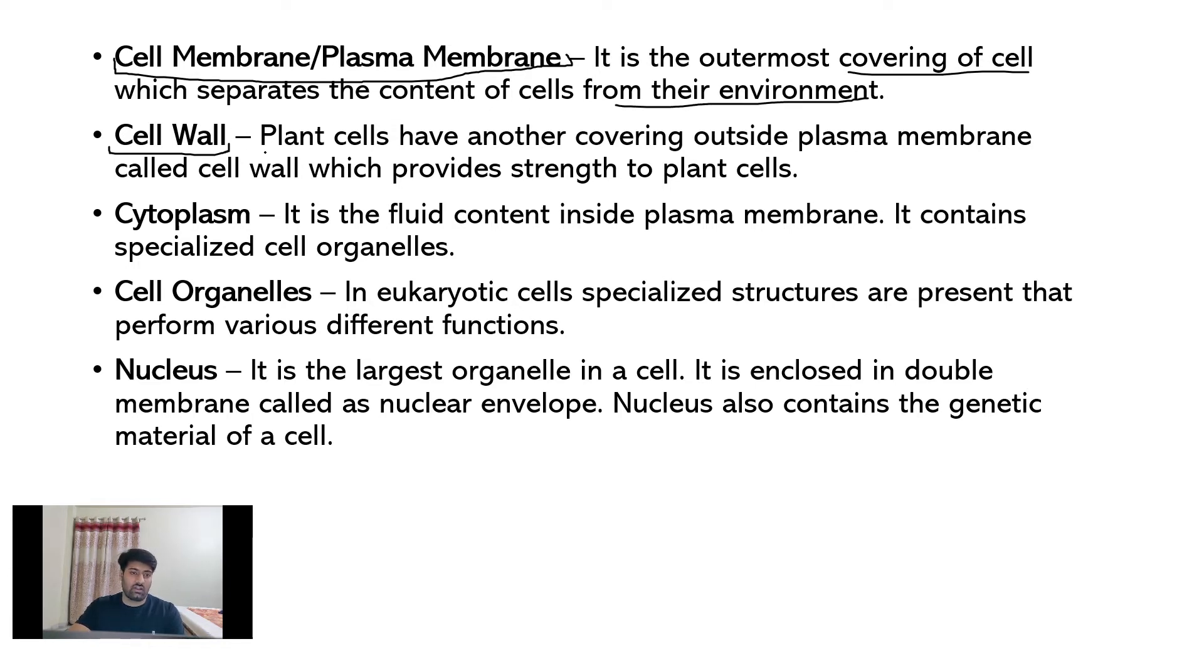Second is cell wall. Plant cells have another covering outside plasma membrane made up of cellulose, which is called as cell wall. It provides strength to plant cells.